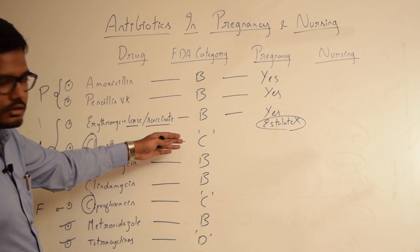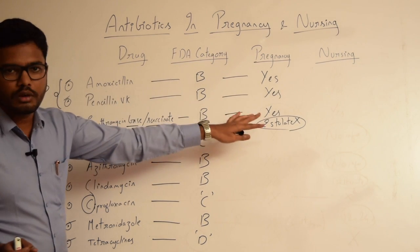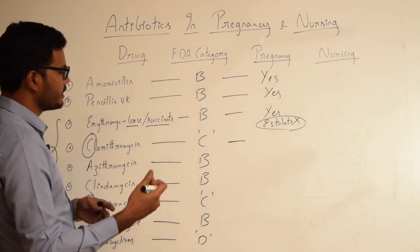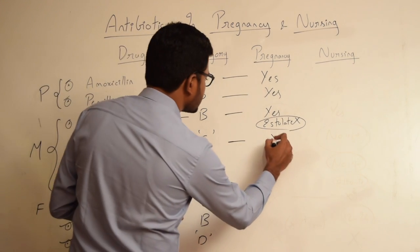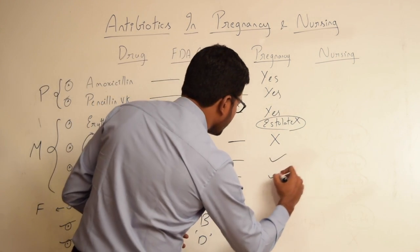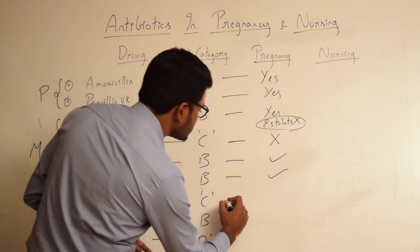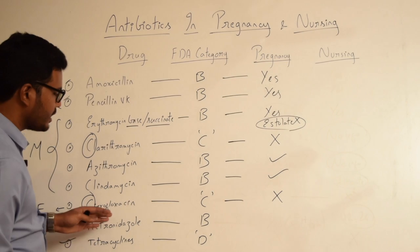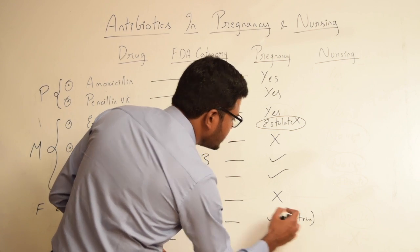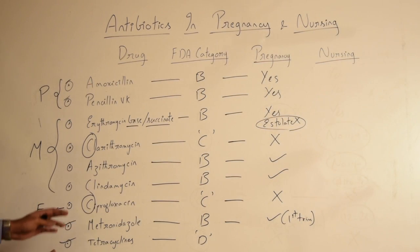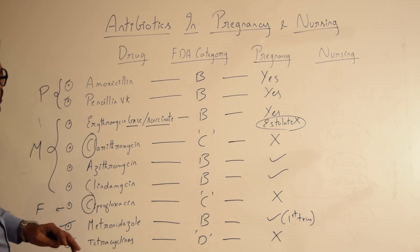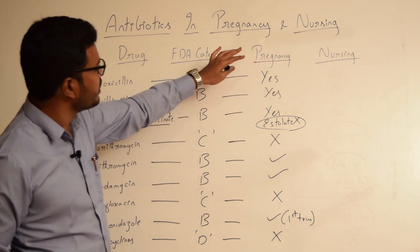As a rule, drugs in category B can be given during pregnancy, while category C drugs should be avoided and an alternative found. Therefore, clarithromycin (category C) should not be prescribed in pregnancy. Azithromycin and clindamycin (category B) can be safely prescribed. Ciprofloxacin (category C) should not be prescribed. Metronidazole can be prescribed but should not be given during the first trimester due to risk of fetal damage. Tetracycline (category D) should not be prescribed during pregnancy.